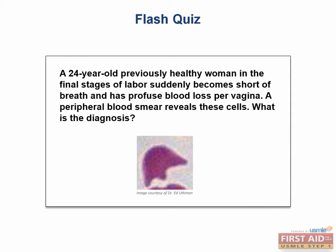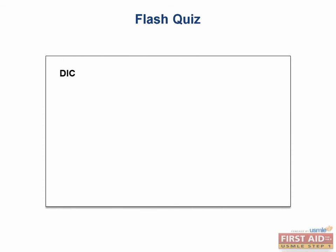Here is an example of a question incorporating the histology of these cells. A 24-year-old previously healthy woman, in the final stages of labor, suddenly becomes short of breath and has profuse blood loss per her vagina. A peripheral smear notes these cells. What is the diagnosis? The schistocytes, plus profuse blood loss in a woman in labor, point to disseminated intravascular coagulation. These cells are fragmented as RBCs try to squeeze past a thrombus in DIC.